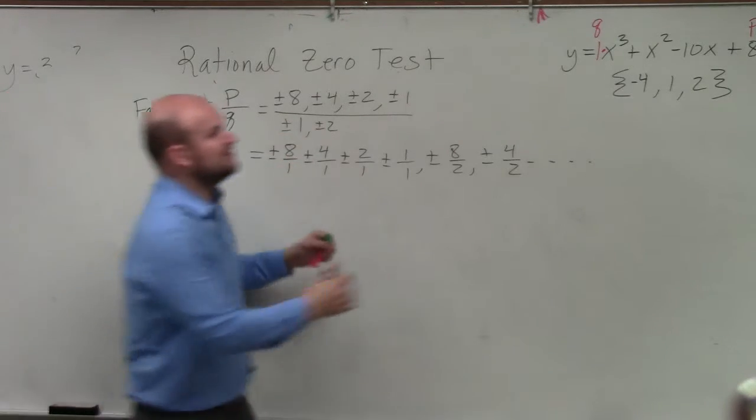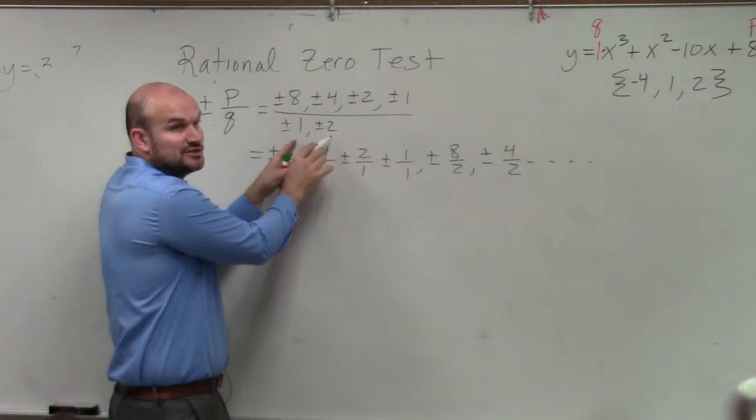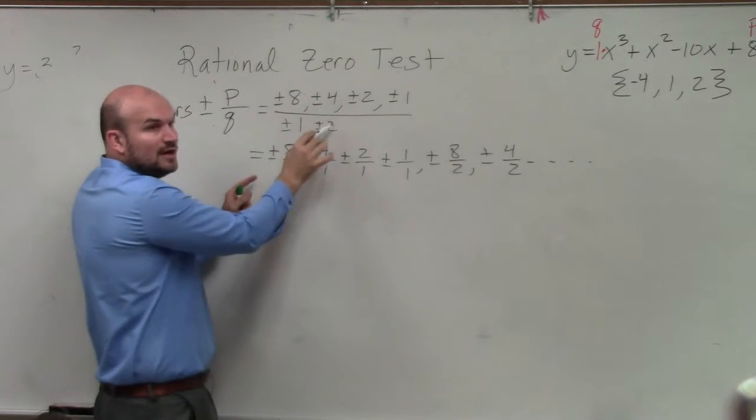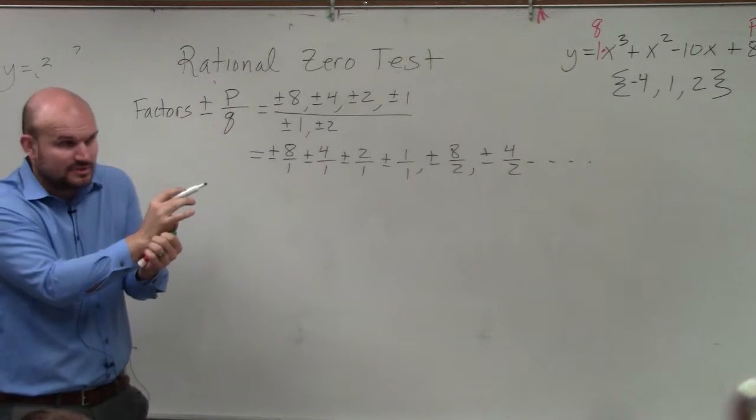If you had another number, like for instance, if this was 2, if this number was 2, you would have two factors, 2 and 1. You'd have to put the 8 over the 1 and the 8 over the 2. Does that make sense? Yes? No? OK.